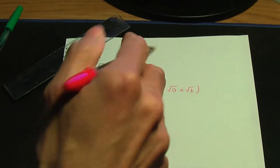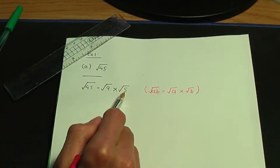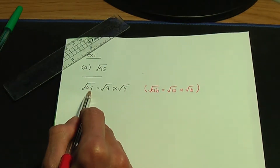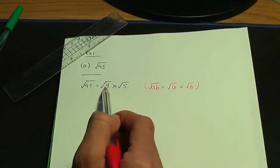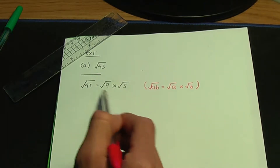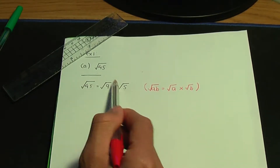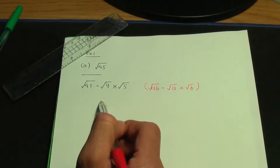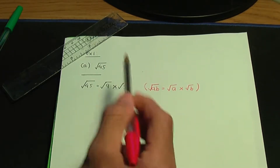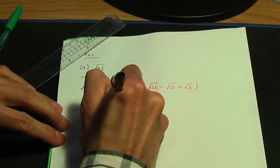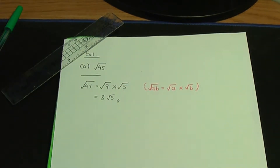The reason I chose root 9 times root 5 is because 9 times 5 gives me 45, and when applying this rule, think of two numbers whereby one of the roots gives you a whole number multiplied by the root of the remaining number. Root of 9 gives me 3, so the answer is 3 root 5.